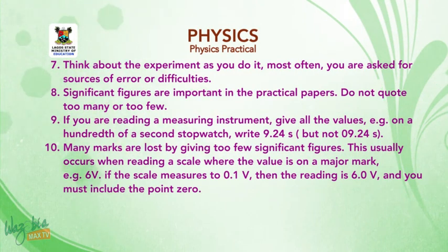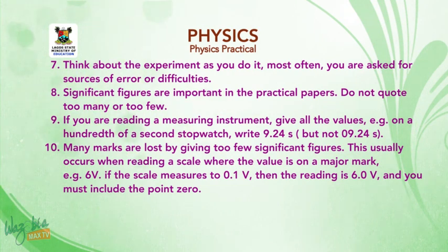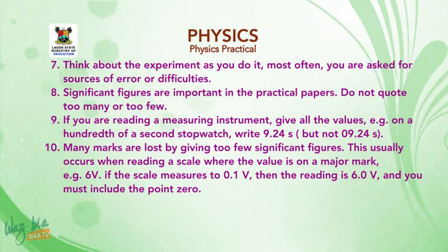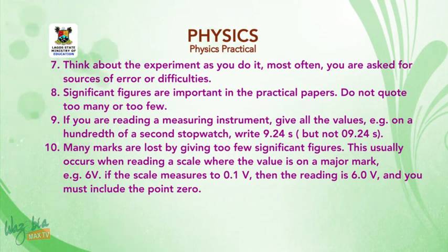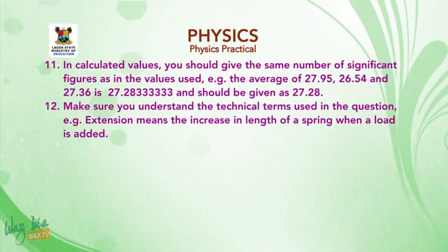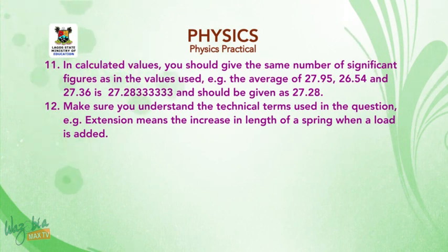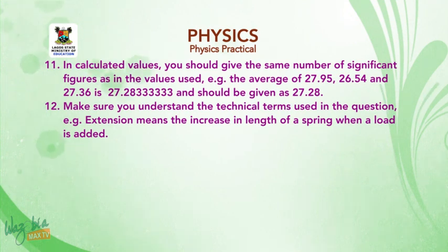If you are reading a measuring instrument, give all the values. For example, on a hundredth of a second stopwatch, write 9.24 seconds but not 09.24 seconds. Many marks are lost by giving too few significant figures. This usually occurs when reading a scale where the value is on a major mark, e.g. 6V. If the scale measures to 0.1V, then the reading is 6.0V and you must include the 0. In calculated values, give the same number of significant figures as in the values — e.g. the average of 27.95, 26.54 and 27.36 is 27.283333... and should be given as 27.28.